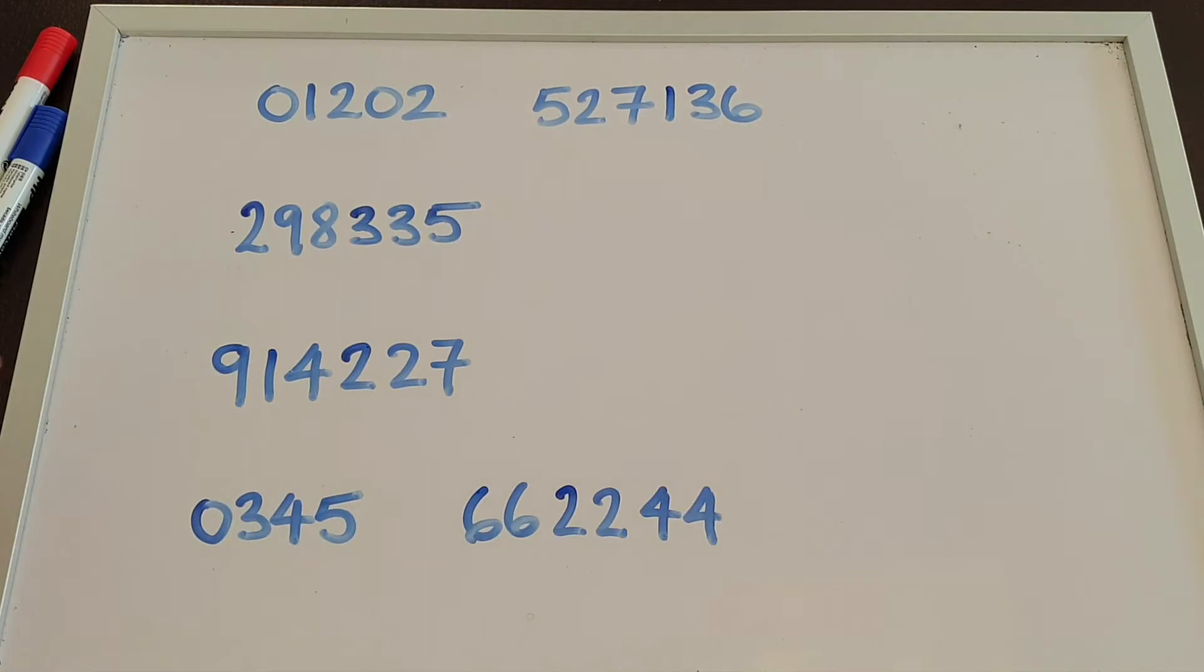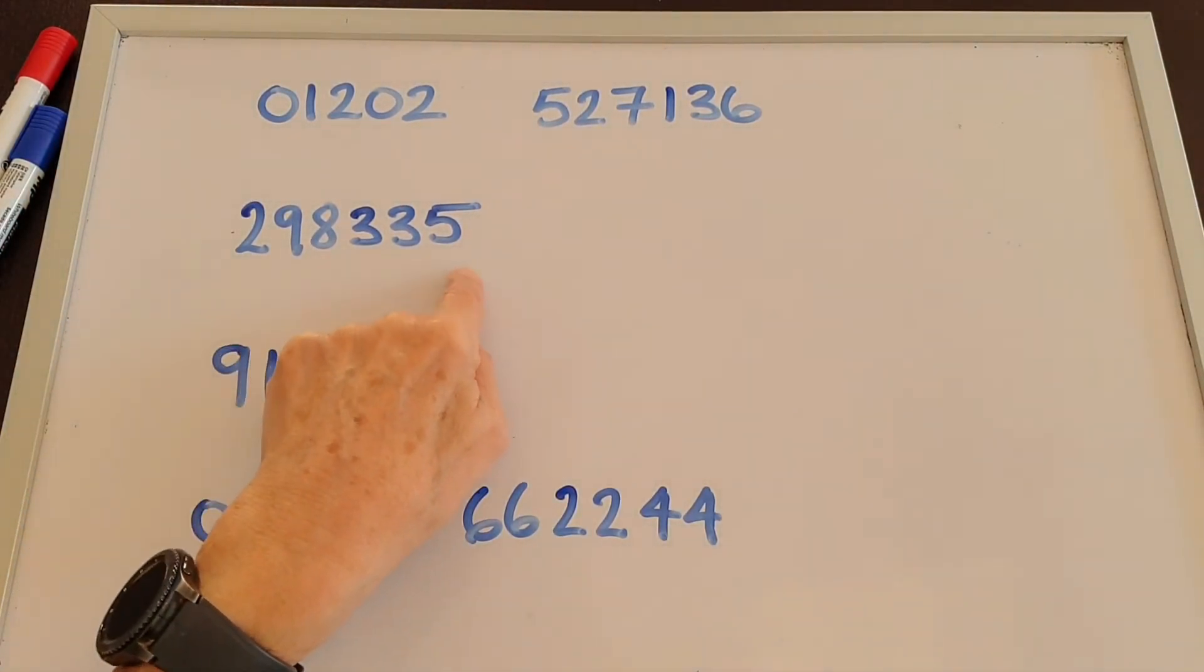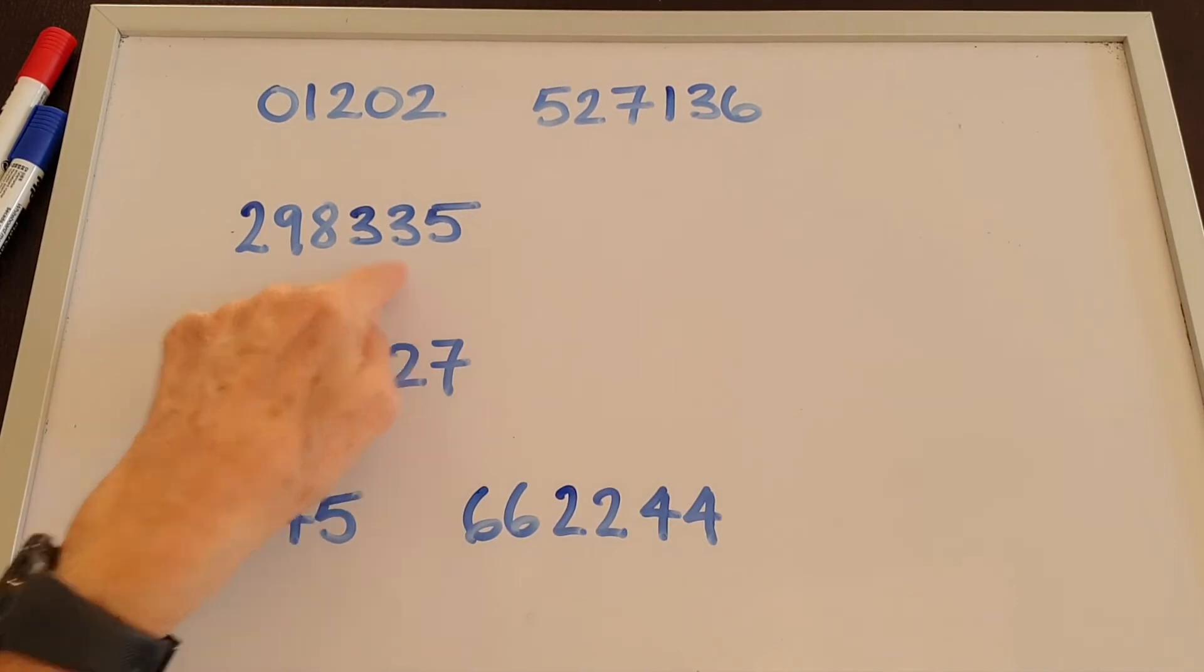Look at the second one: 298335. Again we'll break up the group of numbers into two parts. 298335. Often in British English we'll say 298 double three five. 298335.